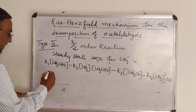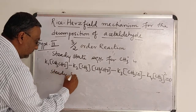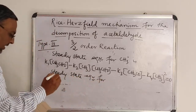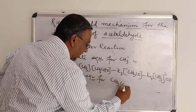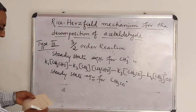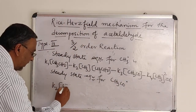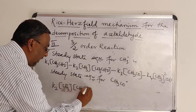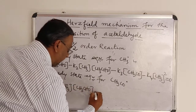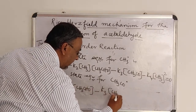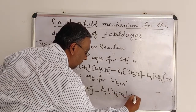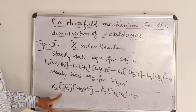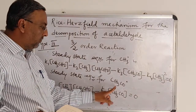Similarly, I am writing the steady-state equation for the acyl radical. For the acyl radical, I can write it as K2·[CH3•][CH3CHO] minus K3·[acyl radical] equals zero. This is the steady-state equation we are using for the acyl radical.